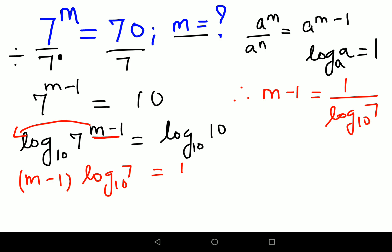Now in order to find the value of m, I will shift this minus 1 to the other side. So I will say m equals 1 plus 1 upon log of 7 to the base 10.